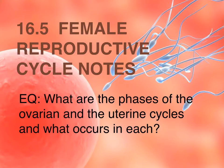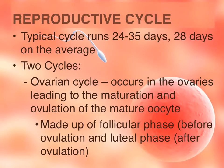This is 16.5 female reproductive cycle notes. The essential question is: what are the phases of the ovarian and the uterine cycle and what occurs in each one? The female reproductive cycle typically runs about 24 to 35 days and could vary among females, but on average it runs about 28 days, which we use as a model to represent the different phases of the two cycles.